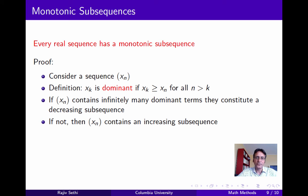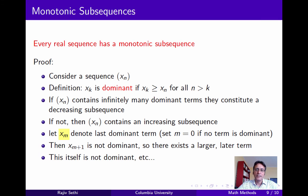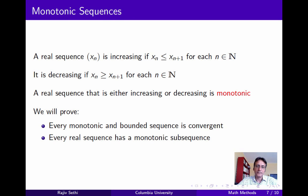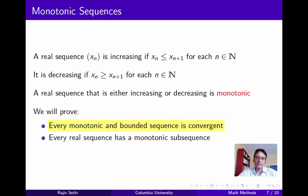If there are only finitely many dominant terms, there must be some last dominant term xm — setting m equal to 0 if no term is dominant. We construct an increasing subsequence starting with xm+1. Since xm+1 is not dominant, there exists a larger term later in the sequence; we find the first such term and add it to our subsequence. That term is also not dominant, so we continue in this manner, obtaining an increasing subsequence. Together, every monotonic and bounded sequence is convergent, and every real sequence has a monotonic subsequence.